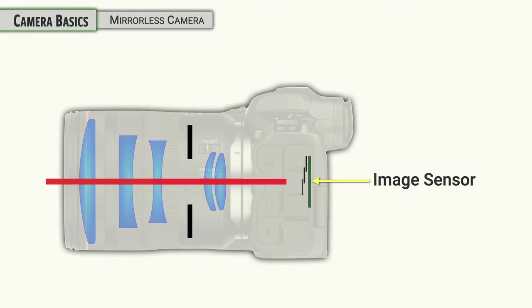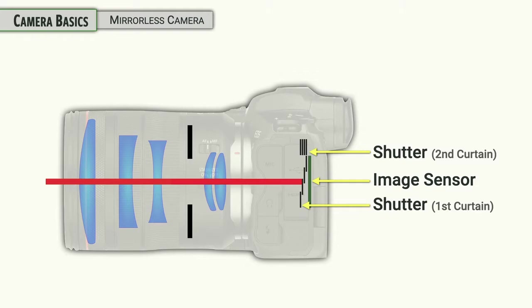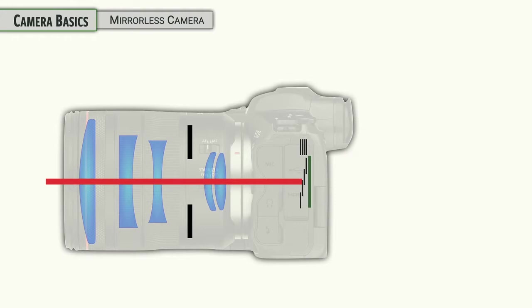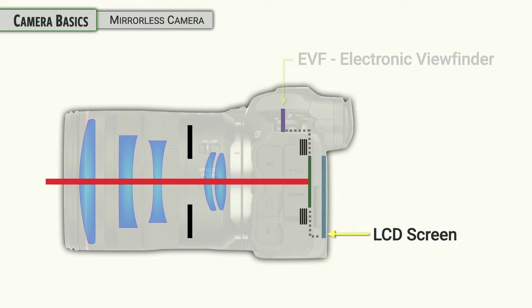The next path that that light takes is getting back to the image sensor. But before it gets back there, it needs to get past the shutter unit, which has a first curtain and a second curtain. Now with a mirrorless camera, it needs to stay open so that it can send information to the LCD screen on the back of the camera and the electronic viewfinder so you can see and compose your image.